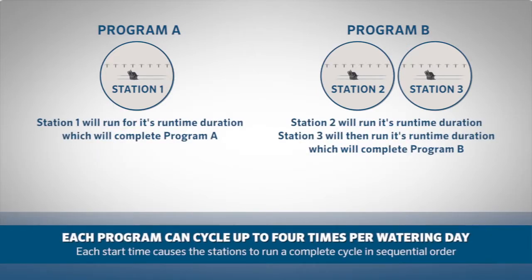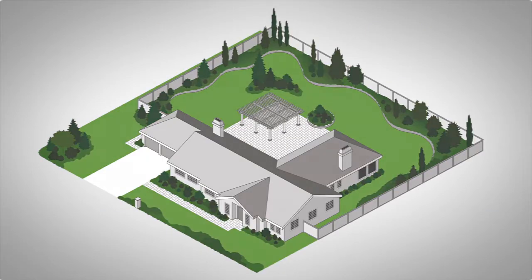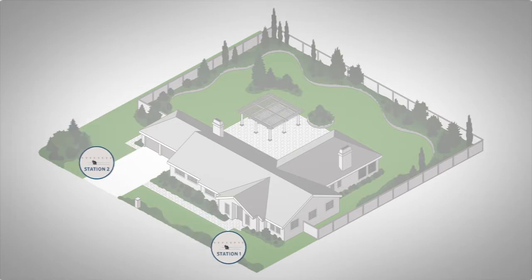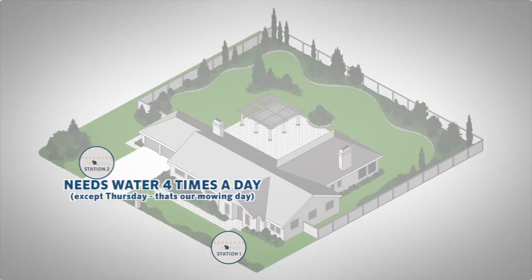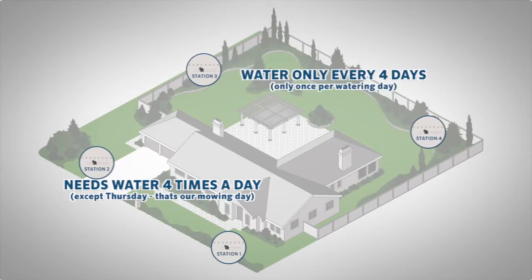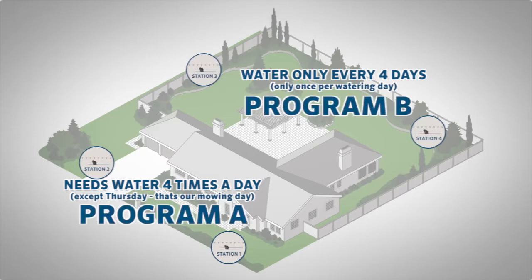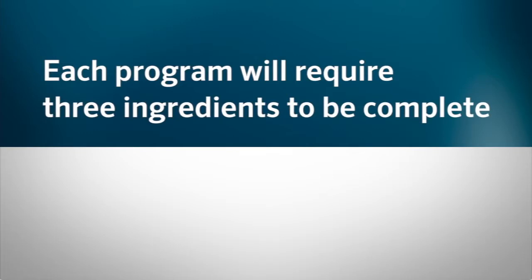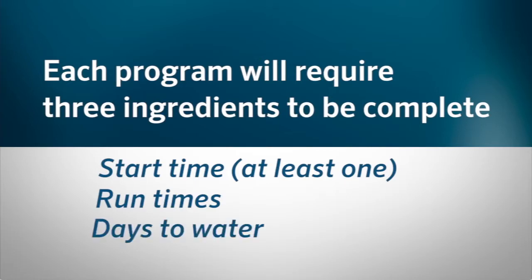A program can cycle up to four times per watering day. Each start time causes all the stations within a program to run a complete cycle in sequential order. For example, if you have two newly seeded zones — stations one and two — you may need to water them daily four times a day, except Thursday which is mowing day. Two other zones with trees may need watering only every four days and once per day. Therefore, divide these four stations into programs A and B. Each program requires at least one start time, run times, and days to water.